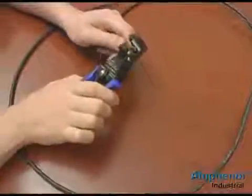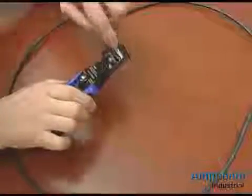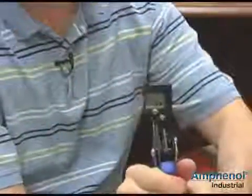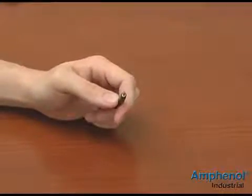The next step will be to take your Helios H4 stripper, put it in there for, in this case, the size 12 gauge, which is the second one in, and you just strip it to the length.